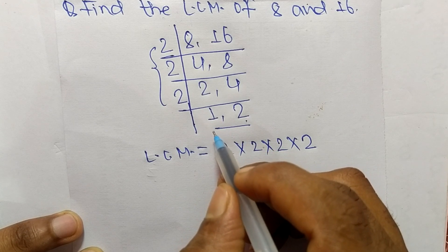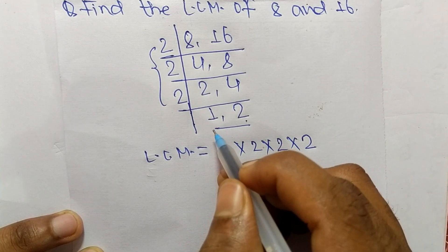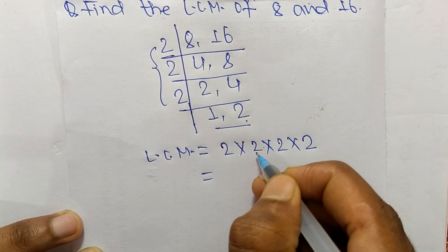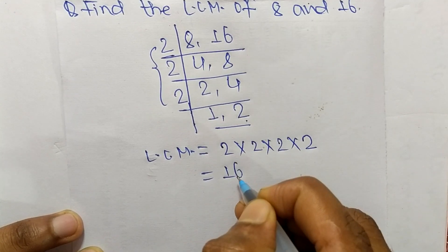And we neglect 1 here because by multiplying any number with 1 we get the same result. So it is 2 times 2 means 4, 4 times 2 means 8 and 8 times 2 means 16.